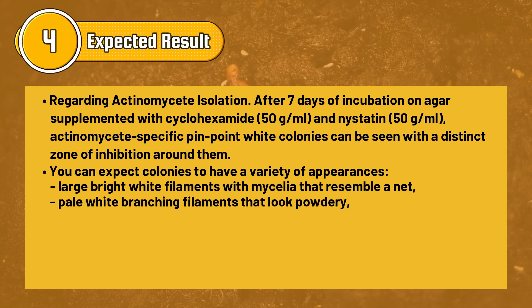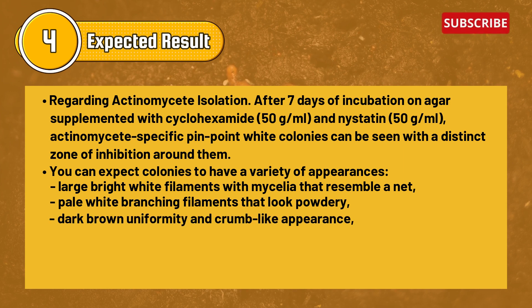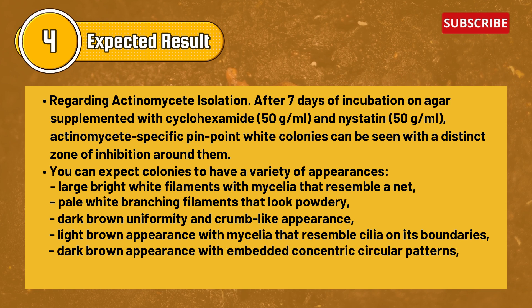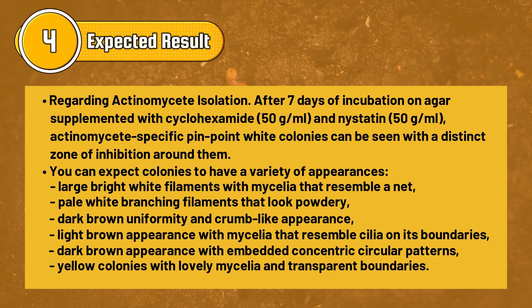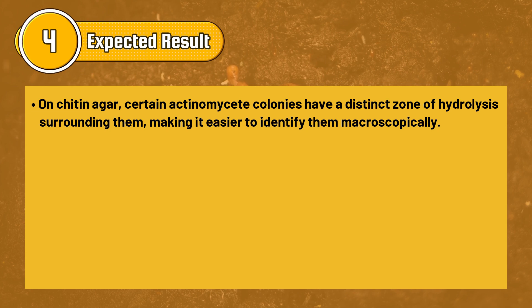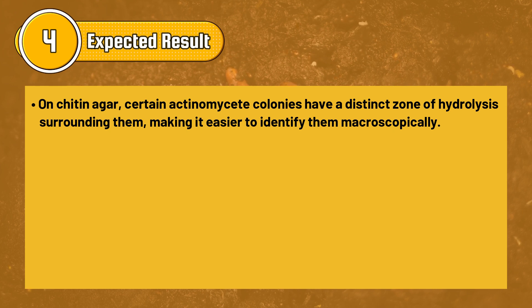Other colony types include pale white branching filaments that look powdery, dark brown uniform crumb-like appearances, light brown appearances with mycelia resembling cilia at the boundaries, dark brown appearances with embedded concentric circular patterns, and yellow colonies with mycelia and transparent boundaries. On chitin agar, certain actinomycete colonies have a distinct zone of hydrolysis surrounding them, making them easier to identify macroscopically.